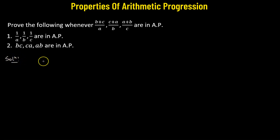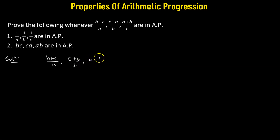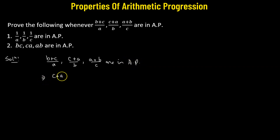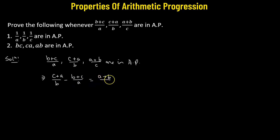We will start with our given numbers. So we have (b+c)/a, followed by (c+a)/b, and (a+b)/c. These three numbers are in AP. This would mean that if we consider the second term, which is (c+a)/b, and from it we subtract the first term, that is (b+c)/a, this must be equal to (a+b)/c, which is the third term, minus the second term, that is (c+a)/b.